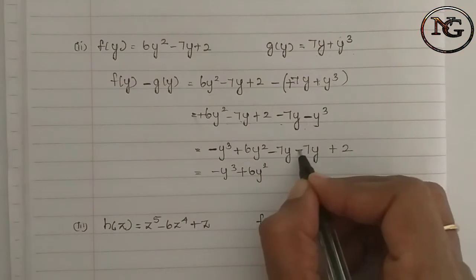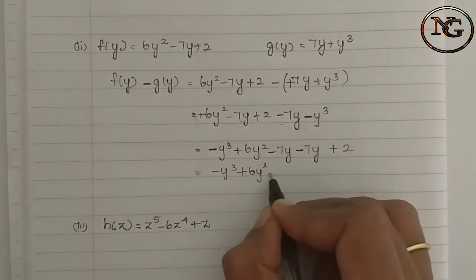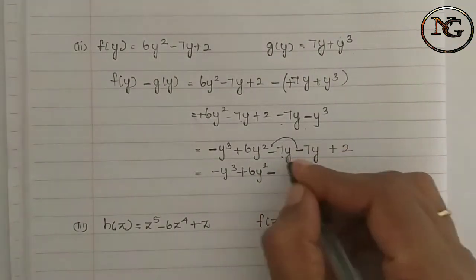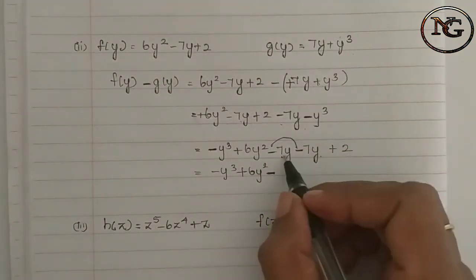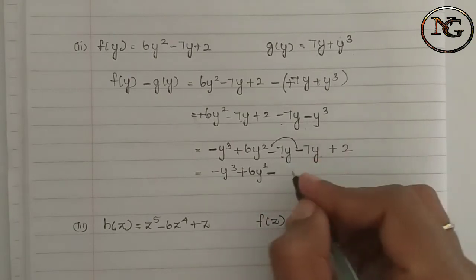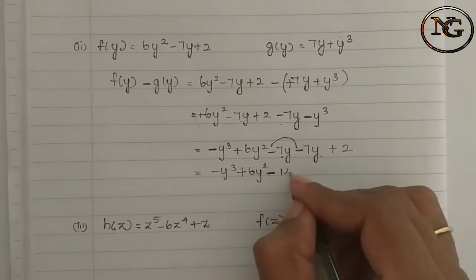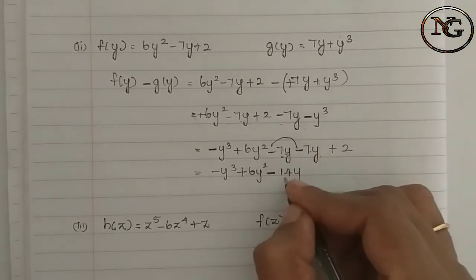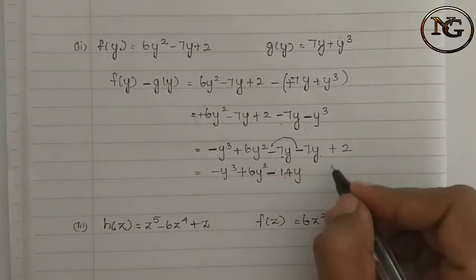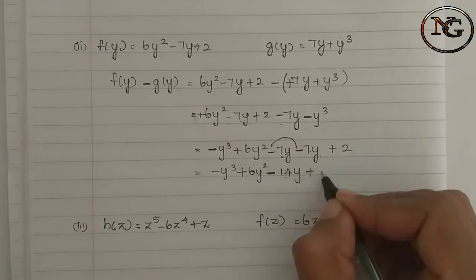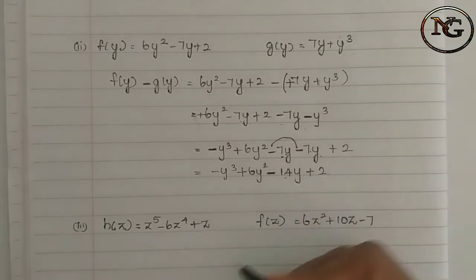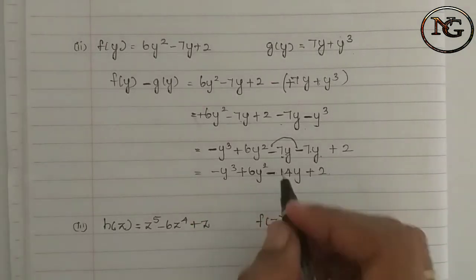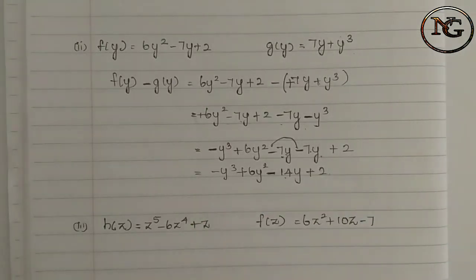Look at the symbol: 2 by minus, same symbol means add. 7y plus 7y is 14y. Then plus 2. This is the resultant polynomial.